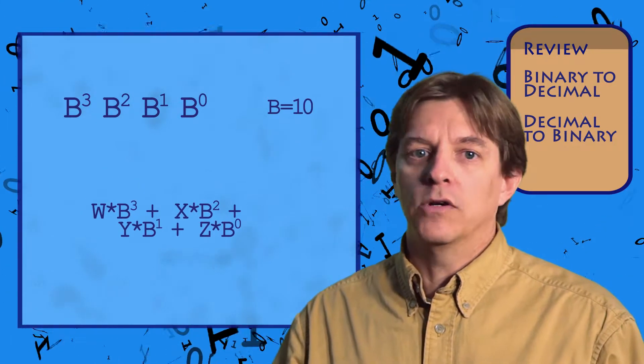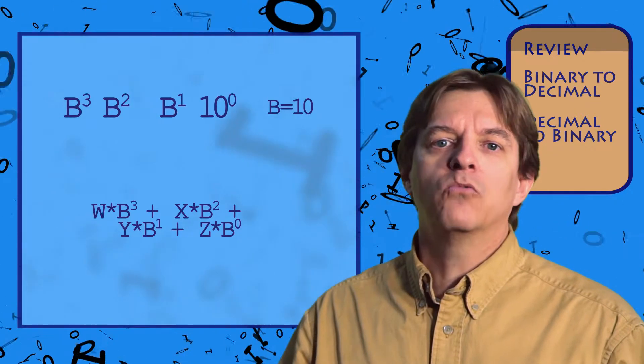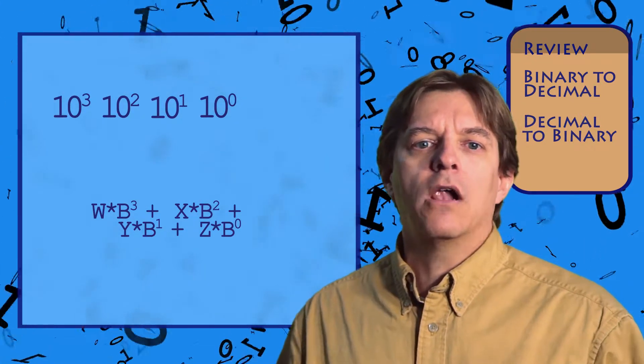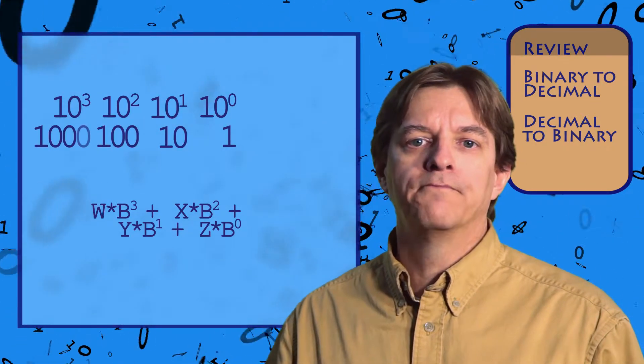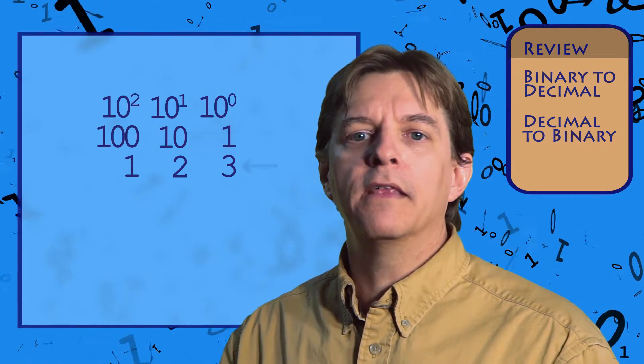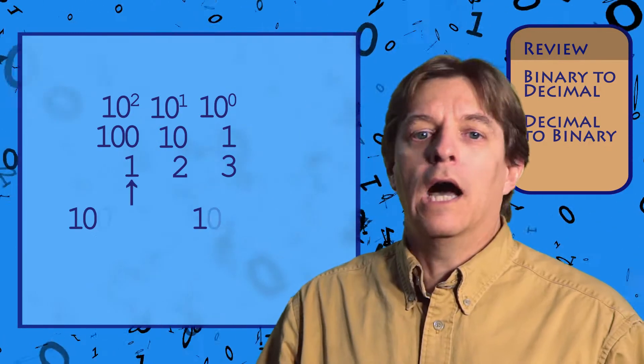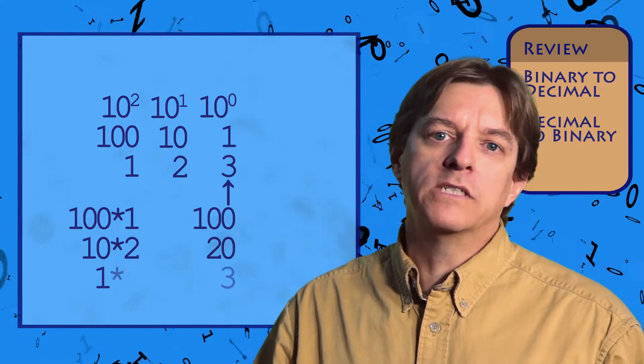In our familiar base 10, or decimal system, the columns are 10 to the 0, 10 to the 1, 10 to the 2, and so forth. This gives us columns that represent units, tens, hundreds, and so on. To get a specific number, say 123, you simply multiply the number in the column by the column's value, or 100 times 1 plus 10 times 2 plus 1 times 3.